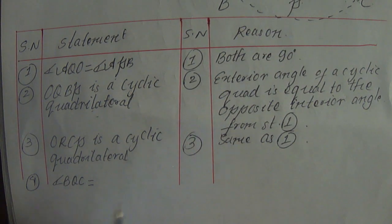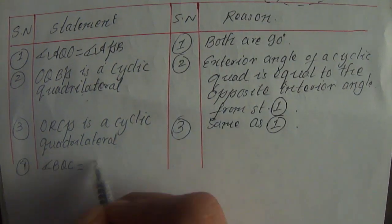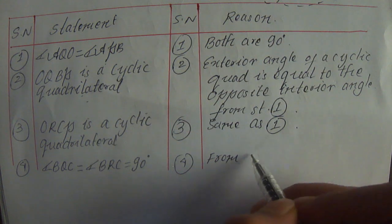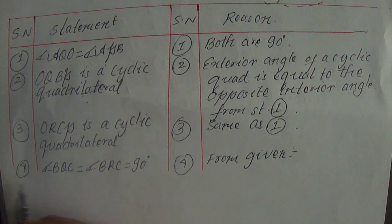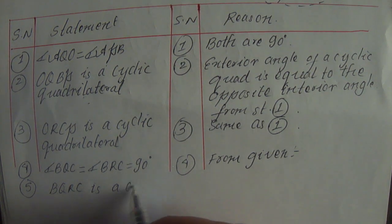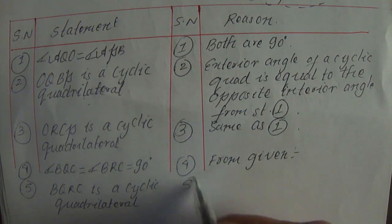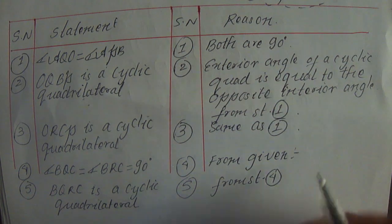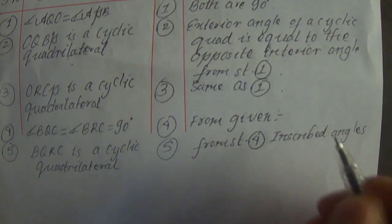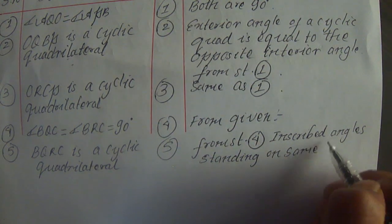Angle BQC is equal to angle BRC. Angle BRC is equal to 90 degrees from given — CQ perpendicular to AB, BR perpendicular — from given. Statement number 5: BQRC is a cyclic quadrilateral. BQRC is a cyclic quadrilateral. Reason: from statement number 4, inscribed angles being equal — inscribed angles standing on the same arc BC.